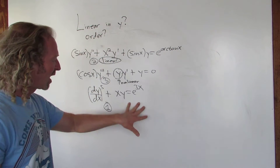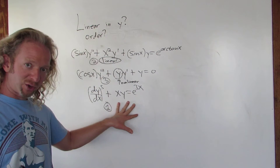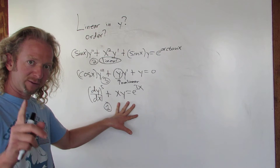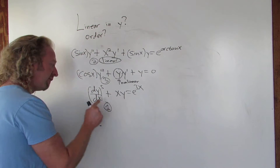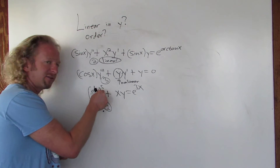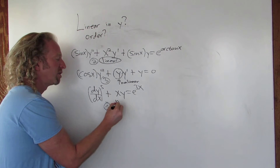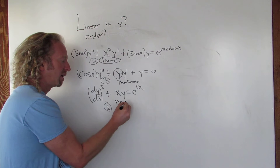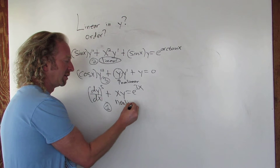This example here, y and all its derivatives have to appear to the first power — fails right away. You have the first derivative to the fifth power, so this would be nonlinear.